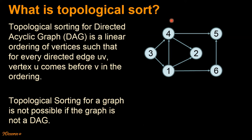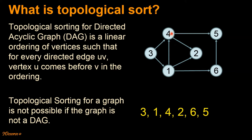For this particular graph, the topologically sorted order of all vertices would be this order. Vertex 3 appears before vertex 1 and 4, vertex 1 appears before 4, 2 and 6, vertex 4 appears before vertex 5 and 2, and so on.